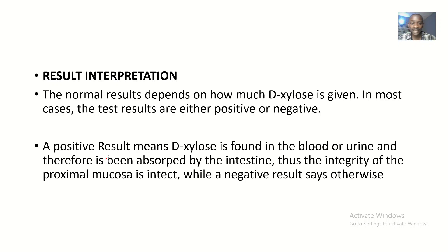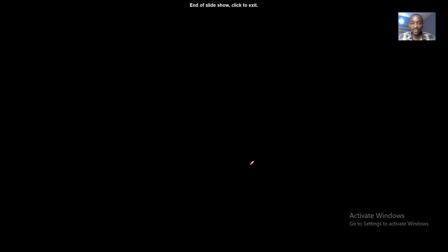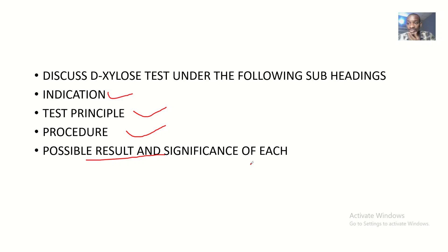For result interpretation, normal results depend on how much xylose is given. Results can be either positive or negative. A positive result means xylose is found in blood or urine, indicating it has been absorbed by the intestine — meaning the integrity of the proximal mucosa is intact. When xylose is not found in urine or blood, the integrity of the proximal mucosa is not intact, so it was not absorbed. That covers the xylose absorption test: indications, test principle, procedure, and possible results.